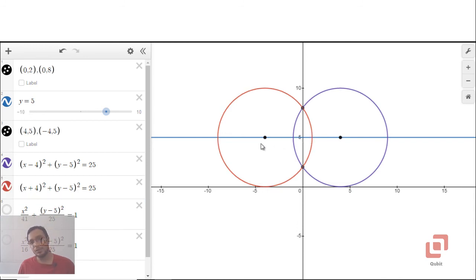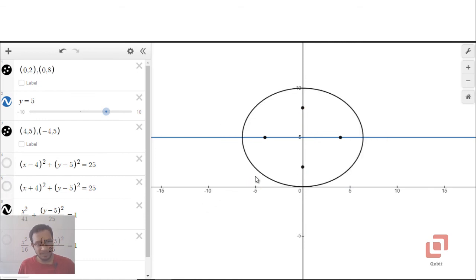So, let me temporarily hide these two circles to get the ellipse. This black ellipse is the one present in option A. And you can see that this ellipse is a horizontal ellipse passing through origin. And because it is horizontal, its foci will be on a horizontal line. And in this case, that line is this one, y equal to 5.